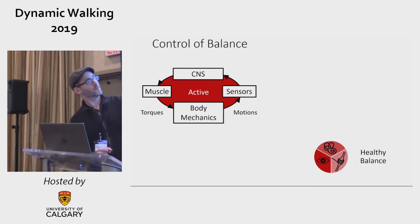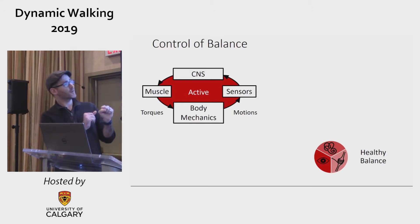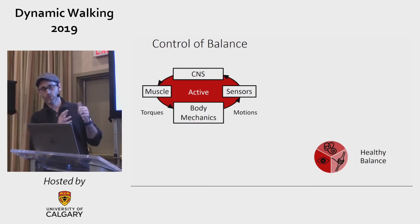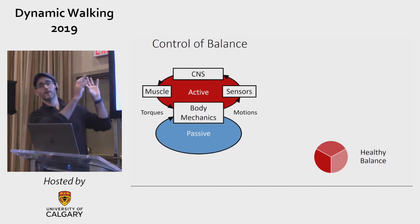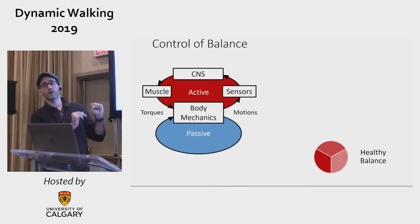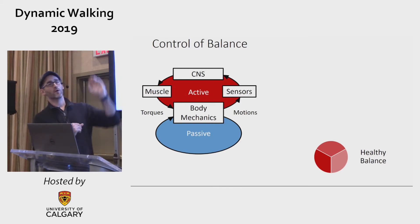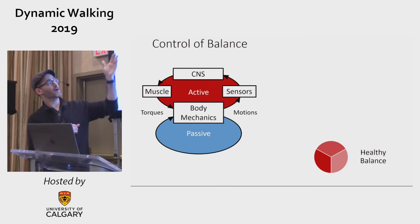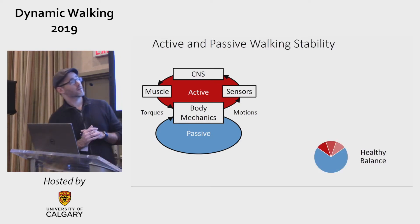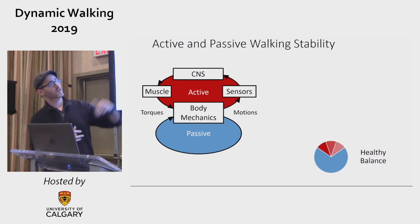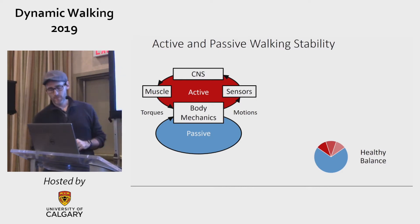We might simplify that as a pie chart where we have to fill that pie chart to be stable, and then we can break it up into the contributions of vision, vestibular, and proprioception. However, this may not be the only story, because if some of the dynamics of the motion are passively stable — meaning that the motions themselves create corrective feedback torques — then we would have to update our diagram to show that balance is achieved through some combination of active and passive feedback.